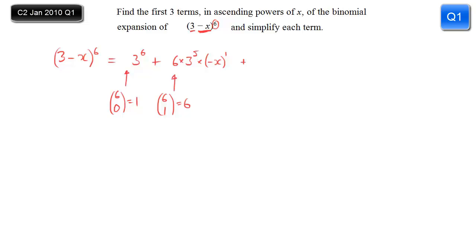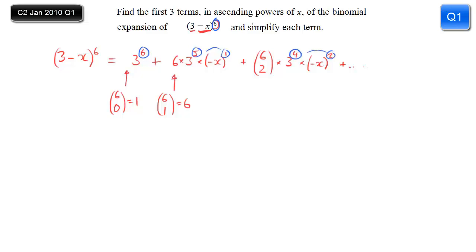We carry on that pattern. I don't know what 6 choose 2 is, so I'll just write 6 choose 2 and work that out on the calculator in a moment. The power of 3 decreases again from 5 down to 4, and the power of minus x has to increase, so that goes up to minus x squared. It's worth noting that the power of 6 is what the powers must add up to in each term: 5 add 1 is 6, 4 add 2 is 6, and that pattern carries on.